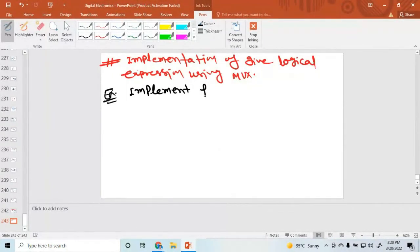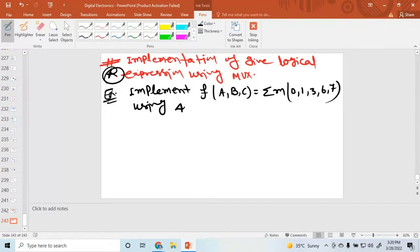Implement a function a, b, and c equal to minterm 0, 1, 3, 6, 7 like this one. This is very important. Minterm of this one using 4 to 1 MUX with a, b as a select line.